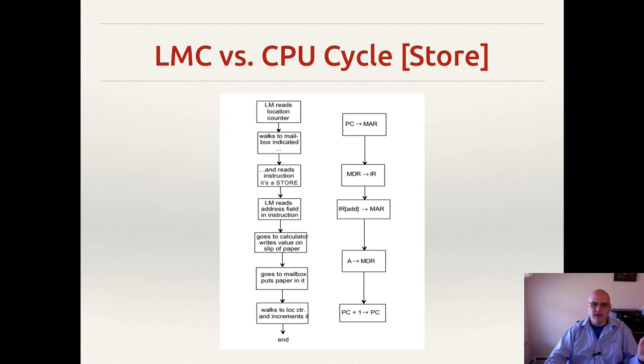And that information came from the operand in the instruction that we retrieved when we decoded it. Now, the next step is to take, in little man computer speak, the value that was in the accumulator, which we know now is just a general purpose register. So let's call it register A, that's perfectly valid. So we're going to take the value of register A, and we're also going to turn on the control lines to take whatever's in that and put that data into the memory data register.